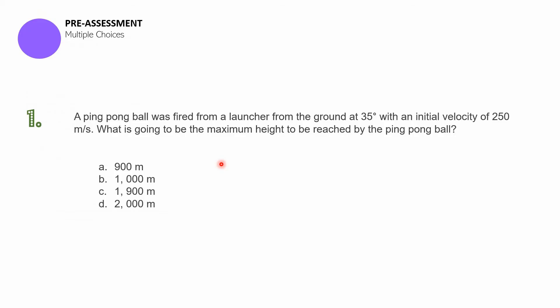Go ahead, get your science notebook or a sheet of paper and answer the following questions. The first question is, a ping-pong ball was fired from a launcher from the ground at 35 degrees with an initial velocity of 250 meters per second. What is going to be the maximum height to be reached by the ping-pong ball? A. 900 meters. B. 1,000 meters. C. 1,900 meters. D. 2,000 meters.